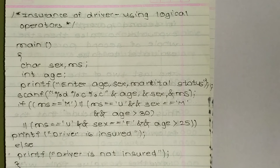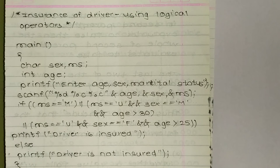Or ms is equal to unmarried AND sex is equal to F AND age is greater than 25. So here in this one sentence we did all of the calculations, that means we did all of the comparisons, so we don't have to use if and else statement again and again repeatedly.